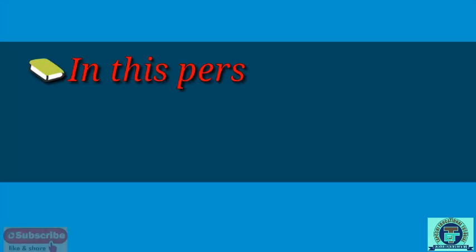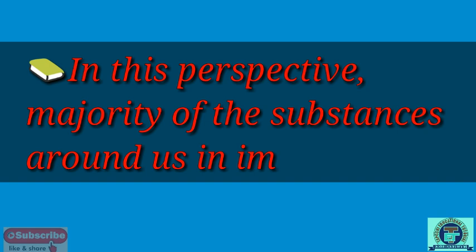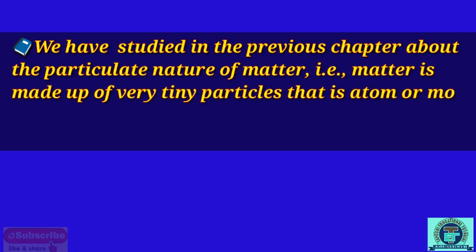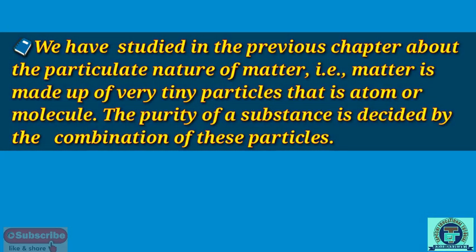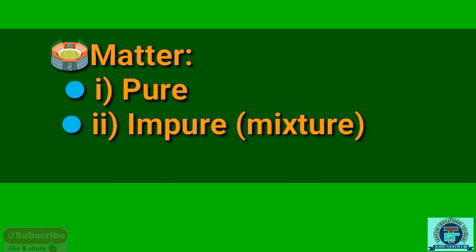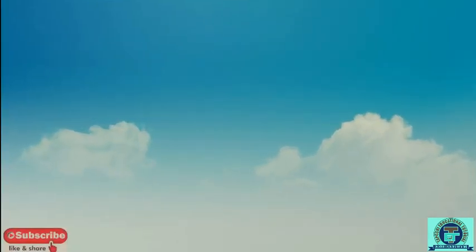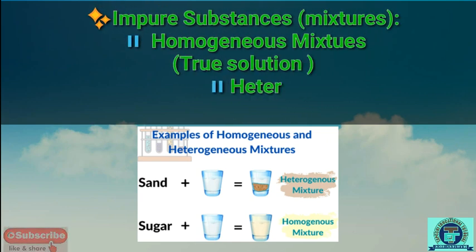In the previous chapter we studied the particulate nature of matter — that matter is made of very tiny particles, that is atoms or molecules. The purity of a substance is decided by the combination of these particles. Matter is further classified into two categories: pure substances and impure substances, meaning mixtures. Pure substances are further classified into elements and compounds.